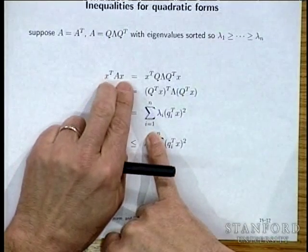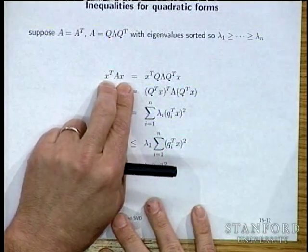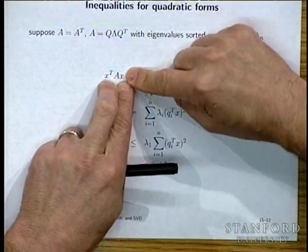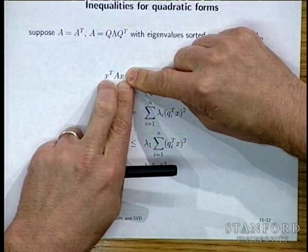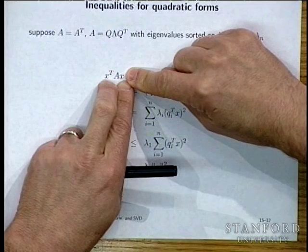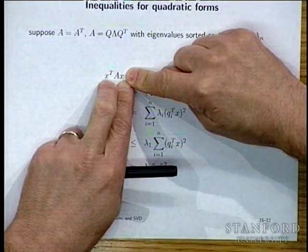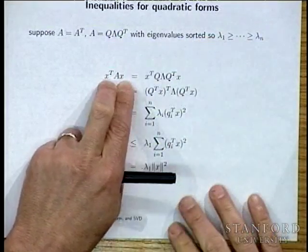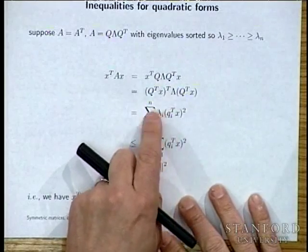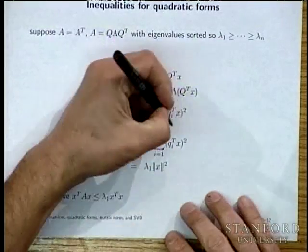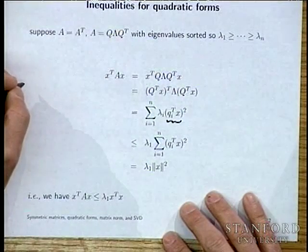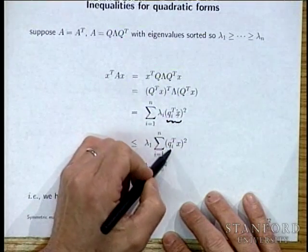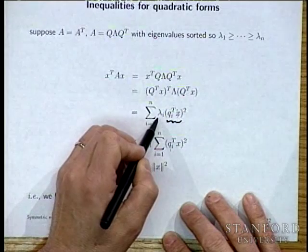How big can the quadratic form be? The answer must scale with norm x squared — doubling x multiplies X transpose AX by 4. Since the terms (Q^T x)_i^2 are non-negative, we can replace all coefficients with the largest eigenvalue lambda_1, and by Parseval's theorem, the sum of squared coefficients equals norm x squared. This gives: X transpose AX is at most lambda_1 times norm x squared.